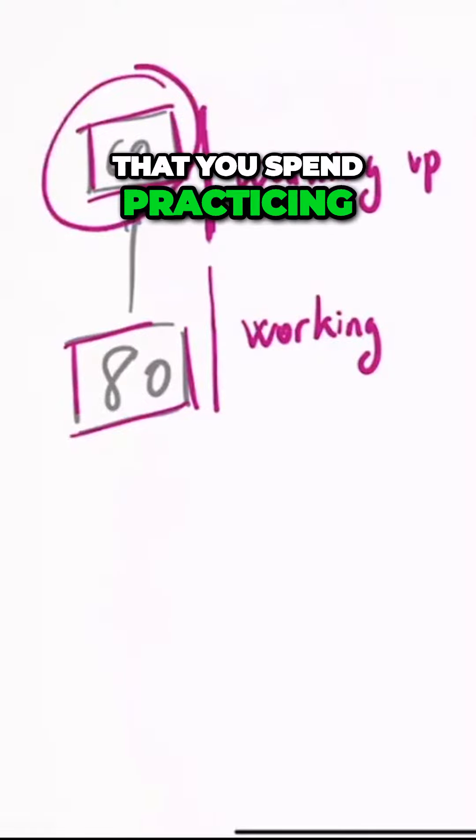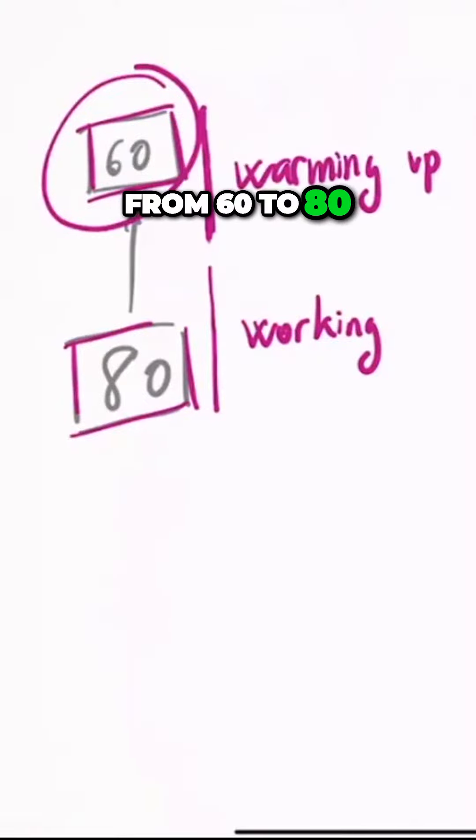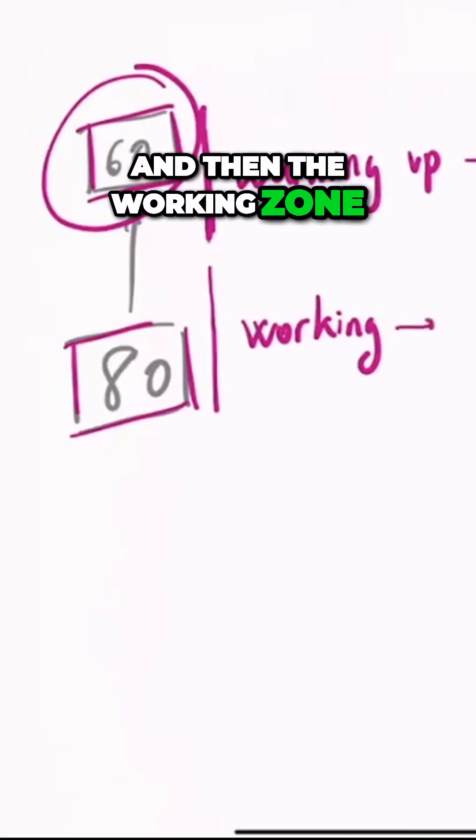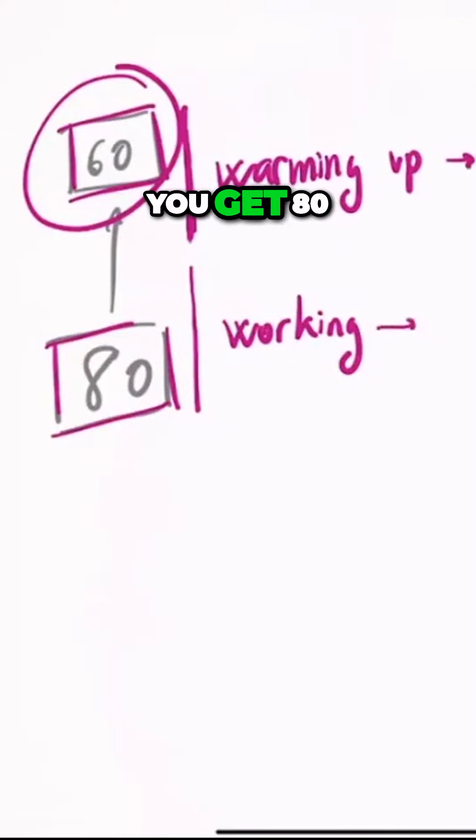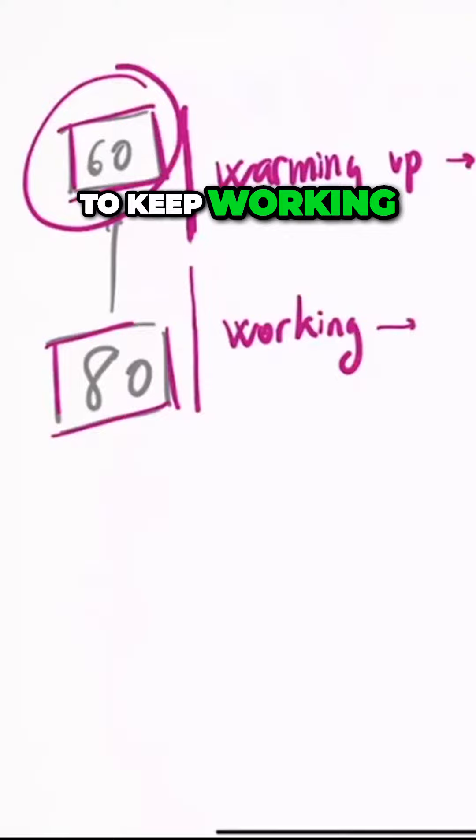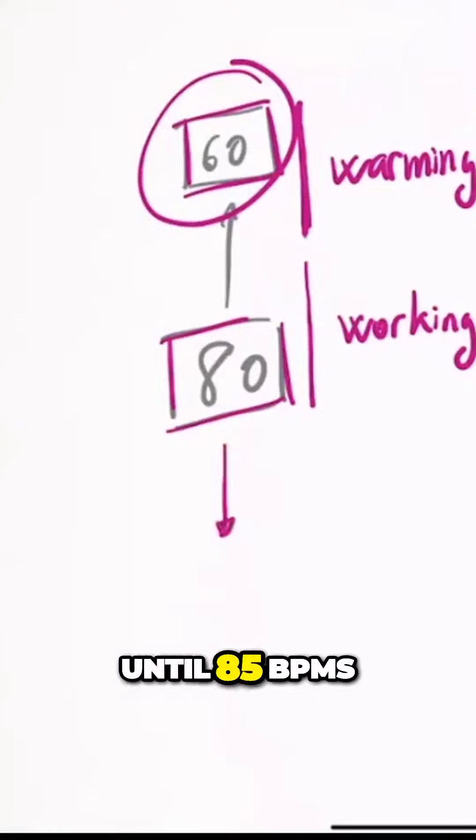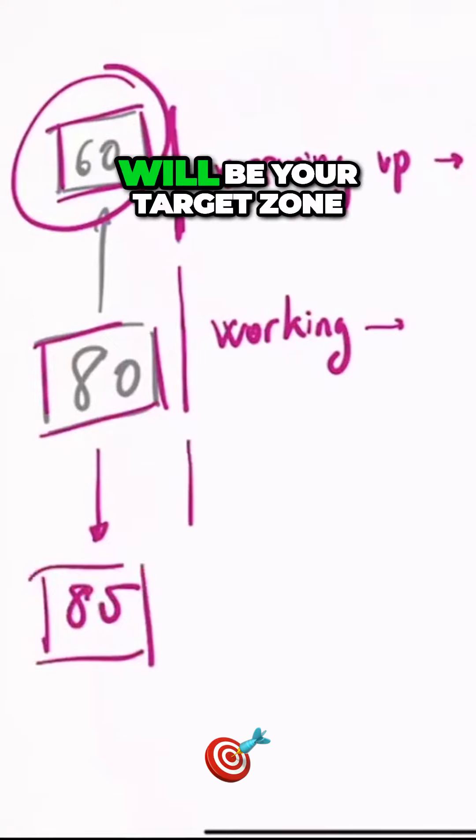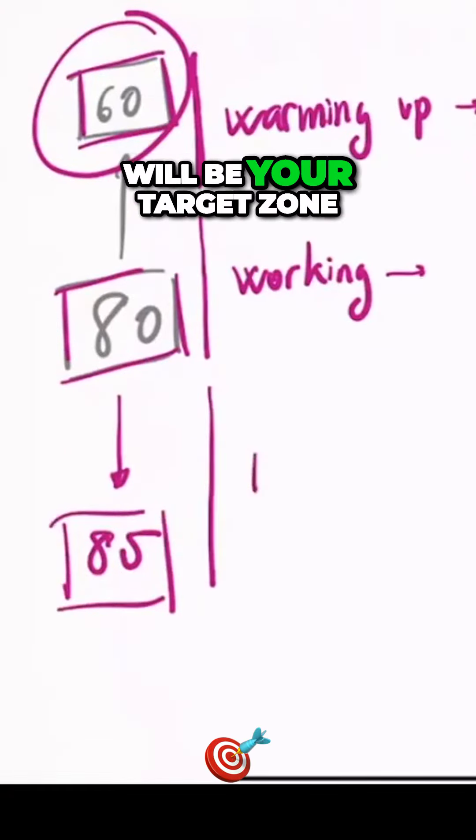So the time that you spend practicing from 60 to 80, more or less than 50% of the time, it's going to be warming up and then the working zone. And once you get 80, the metronome is going to keep working. And imagine that today you reach until 85 BPM. So this zone will be your target zone.